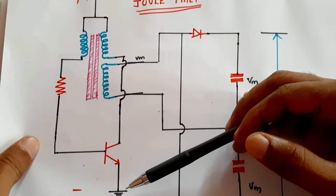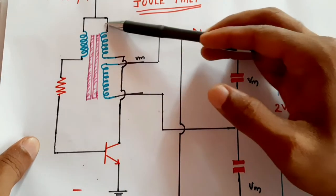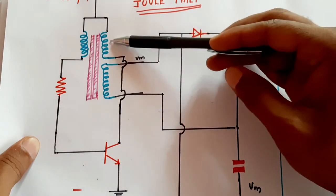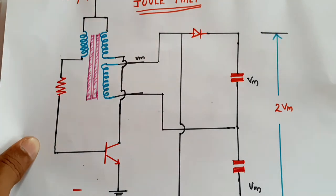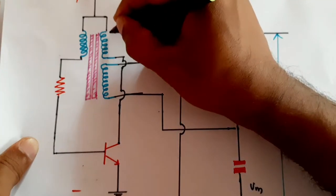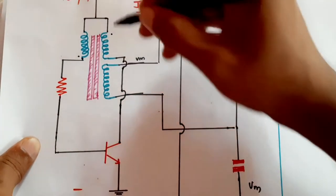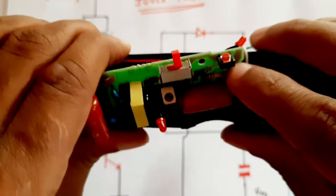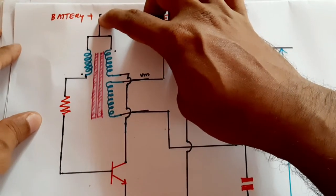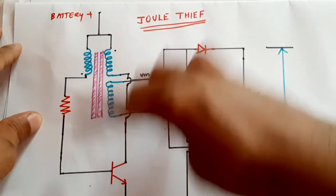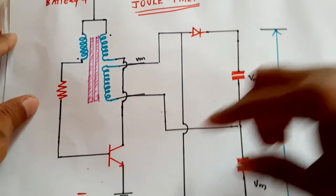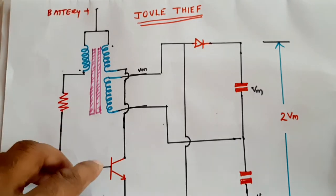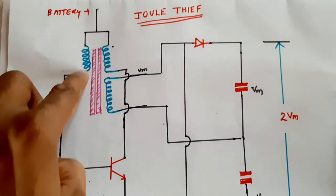From the same point there is another winding. The polarities of these windings are opposite to each other. When we press the push button, the battery voltage is available between these points. When the battery is connected, some current will flow through the circuit.